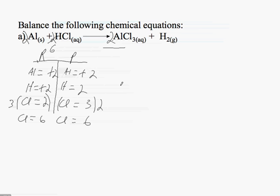So again, if I have 6 and 2, I need to have a common multiple between those two. And that common multiple would be 6. So if I take the product side and multiply it times 3, 3 times 2 would give me 6, which would mean I would have a 3 in front of my H2 on the product side.